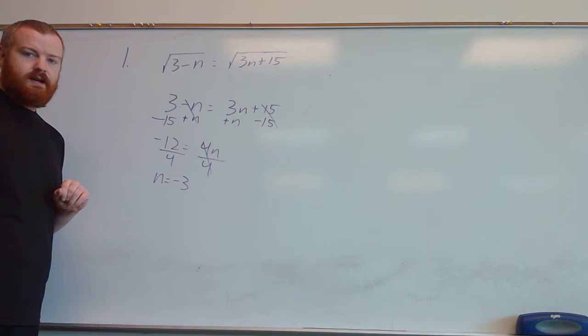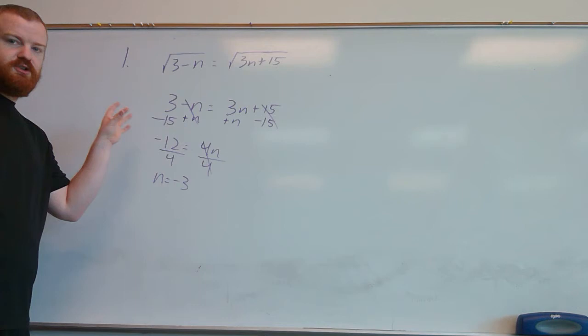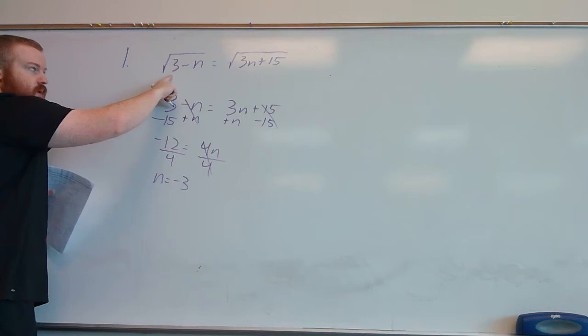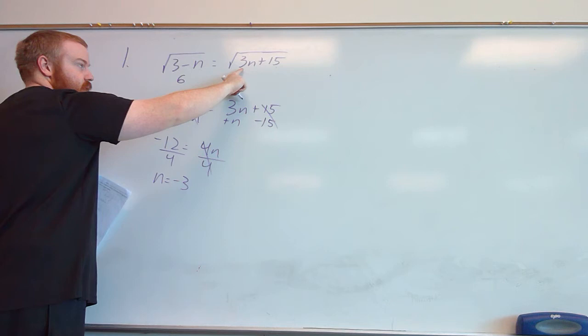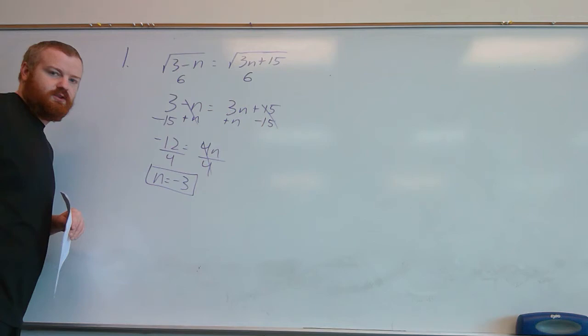With radicals, we have to plug the answer back in to make sure it works. We plug it into the inside of each radical to see if we get a positive number — we're making sure we get the same thing on both sides. Remember, we only have to do this if we have an even-numbered radical, like a square root. Plugging in negative 3 for n: here we get 3 minus negative 3, which is positive 6. On the other side, 3 times negative 3 is negative 9, and negative 9 plus 15 is also positive 6 — same on both sides, so the solution is good.